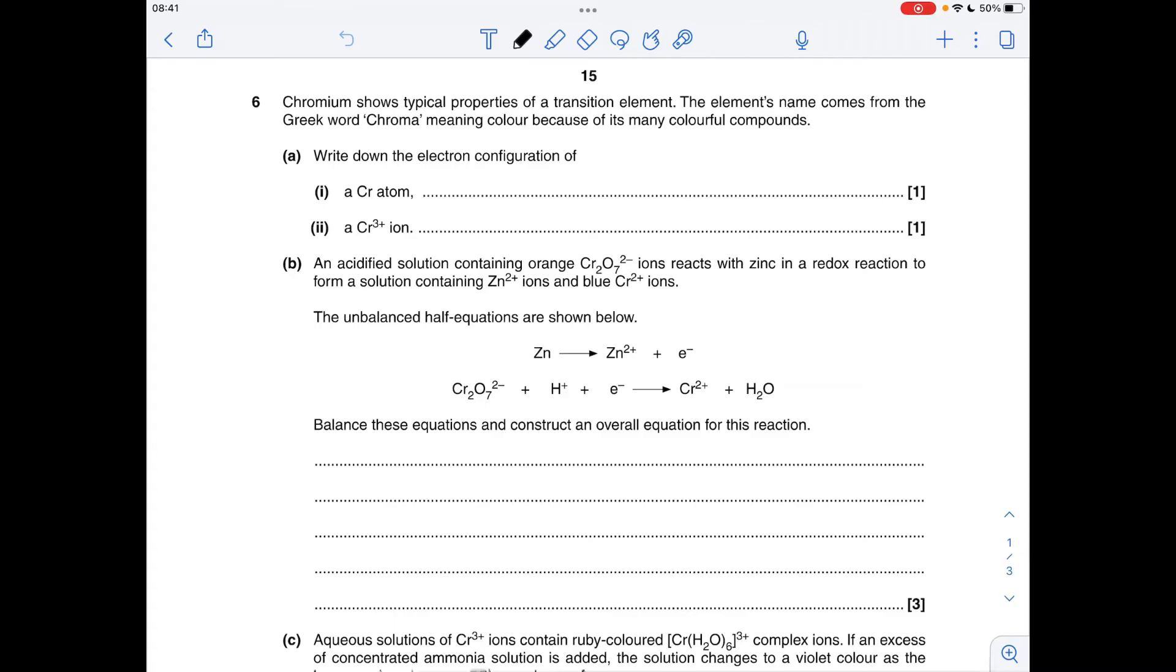Okay, so we'll make a start. We've got to write two electron configurations, one of a chromium atom and the other of a Cr³⁺ ion. Just got to be careful with chromium, it's one of the weird ones where it has the 4S1 configuration rather than 4S2.